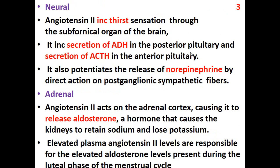Angiotensin 2 also has neuronal effects. It increases the thirst sensation through the sub-fornical organ of the brain. It increases the secretion of ADH from the posterior pituitary and the secretion of ACTH from the anterior pituitary. It also potentiates the release of norepinephrine by direct action on the postganglionic sympathetic fibers.